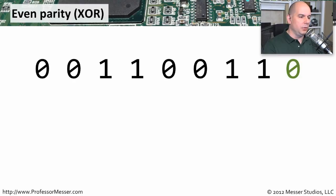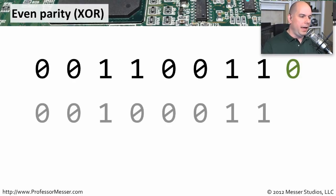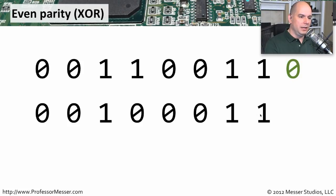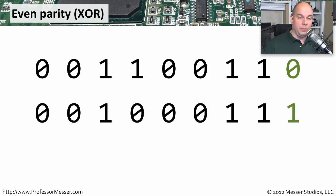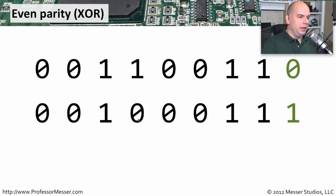We send this entire bit sequence down the line or store it somewhere. The receiver examines it and counts the ones — including the parity bit. If it counts to four, the parity matches, and there must not have been any corruption along the line. That's a very common simple way to check for this. Obviously there are other ways to do checks, like MD5 or SHA-256, but those are outside the scope of A Plus. Dealing with just parity makes it easy.